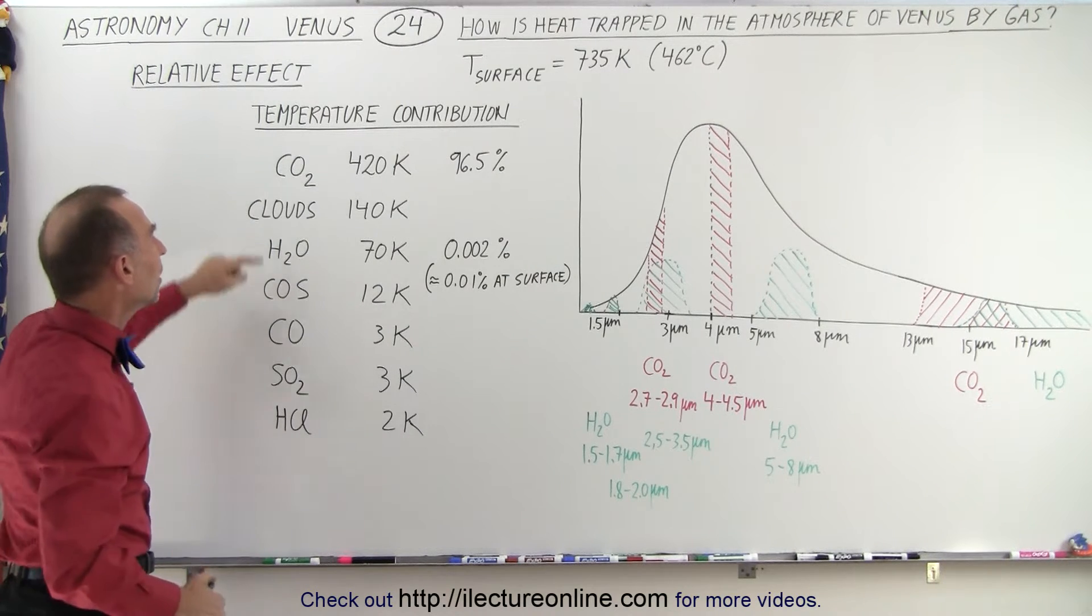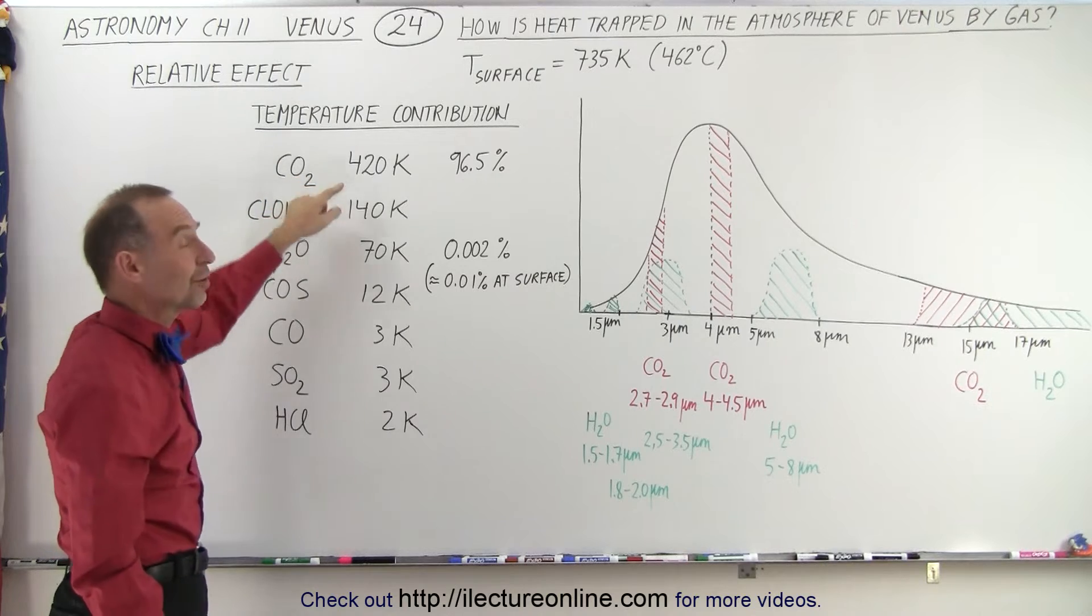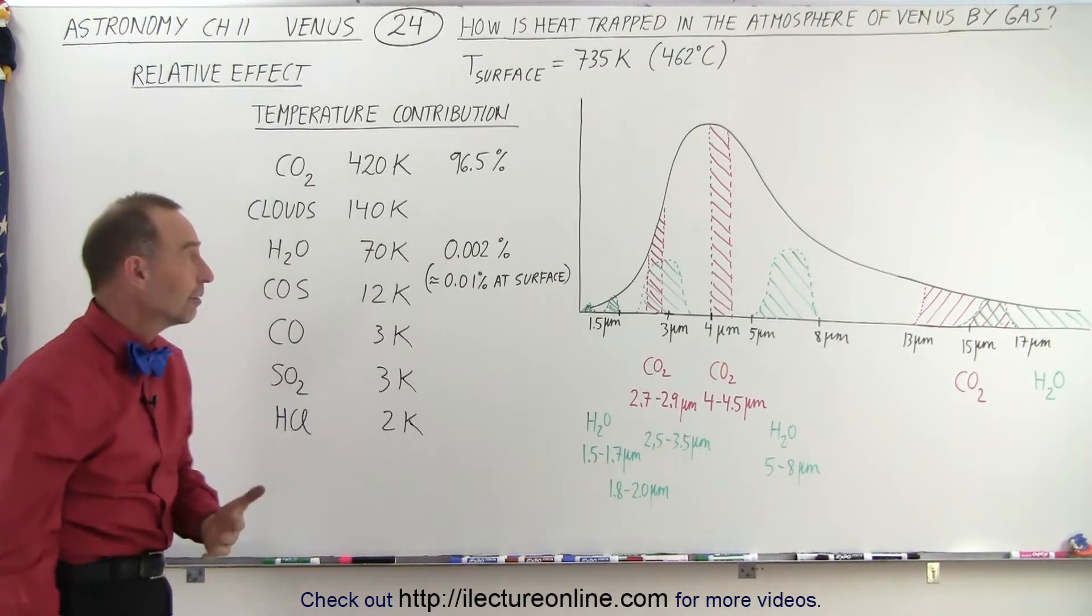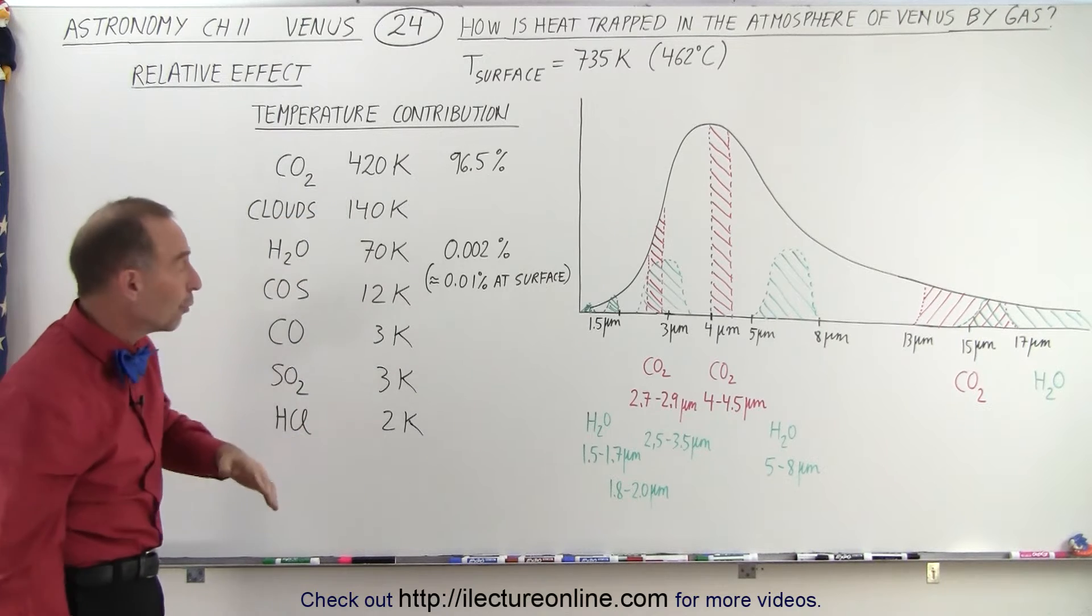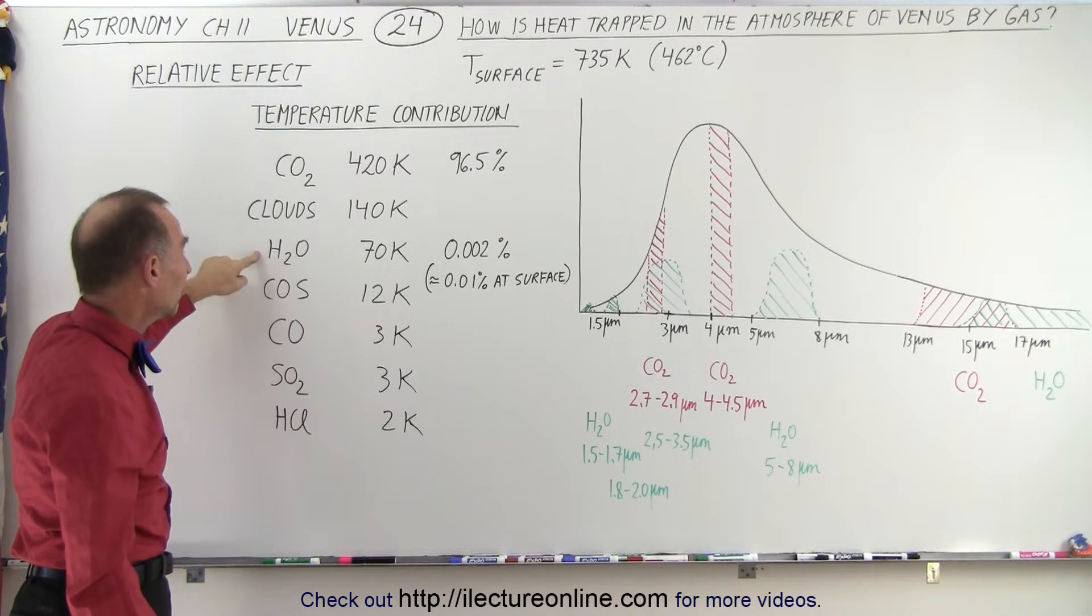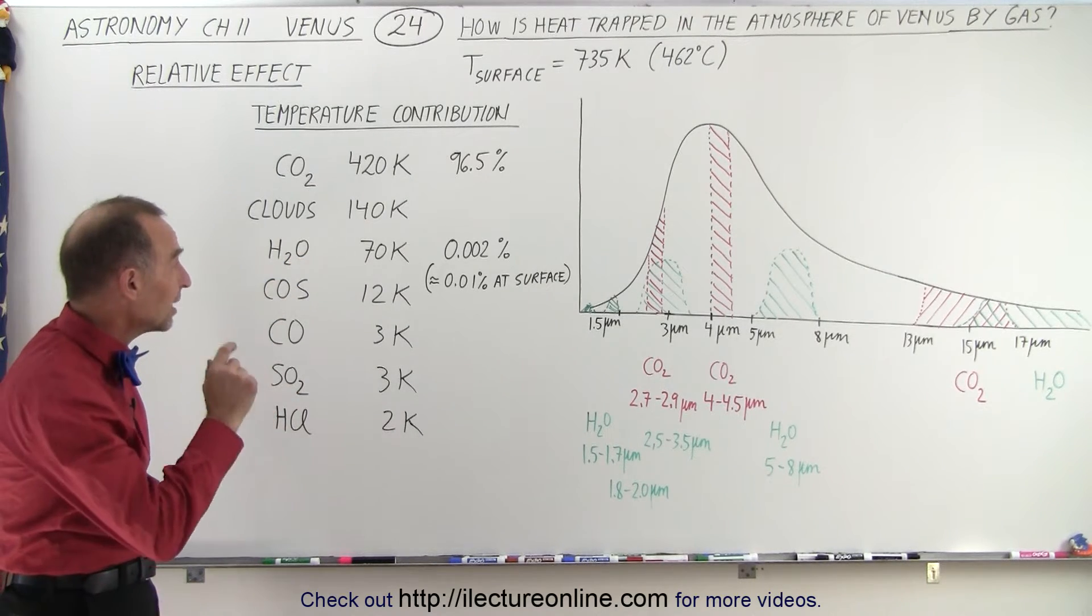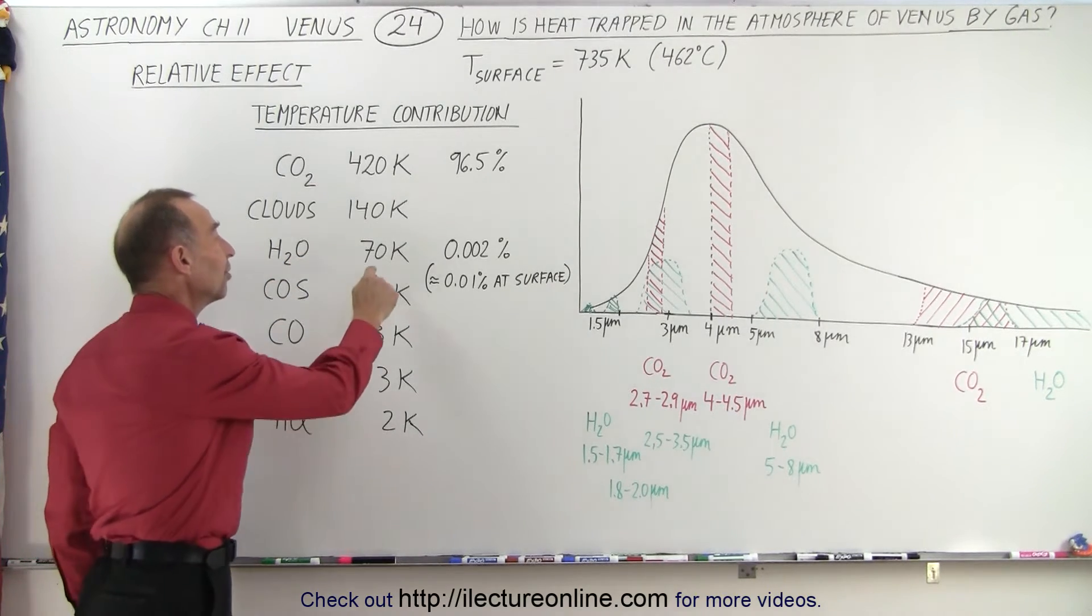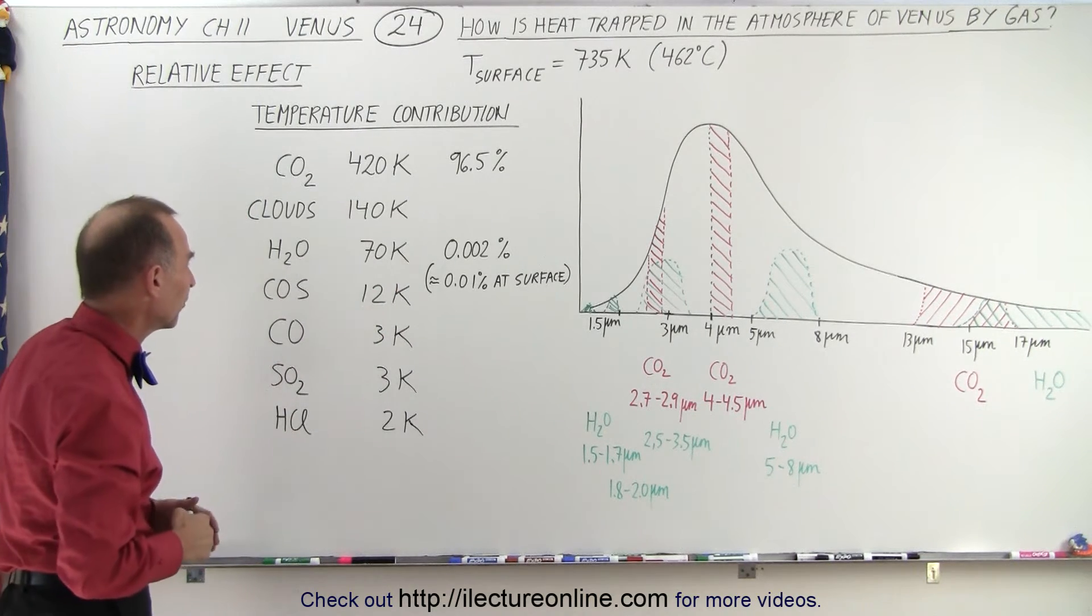But independently speaking, we can say that the increase in temperature due to the carbon dioxide in the atmosphere is 420 Kelvin. The increase in temperature because of the cloud cover, about 140 Kelvin. And yes, sure enough, the increase in temperature because of water vapor, even though the amount of water vapor in the atmosphere is so minute, is still about 70 Kelvin because water vapor is such a good absorber of energy.